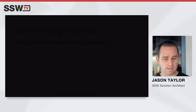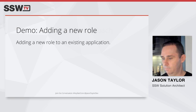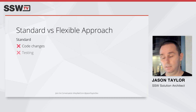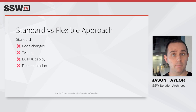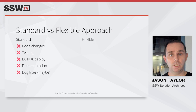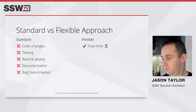Comparing the two approaches: with the standard approach using role-based access control, we had to make code changes, test, build and deploy, update documentation, and likely fix bugs — especially for a large system. With the flexible approach, it resulted in more free time. We didn't have to make code changes at all because we put the capability to make those changes into the hands of the application administrators.